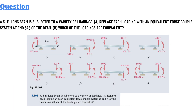Our today's question which we'll be discussing is: a 3 meter long beam is subjected to a variety of loadings. Option A is to replace each loading with an equivalent force-couple system at the end A of the beam. Which of the loadings are equivalent?